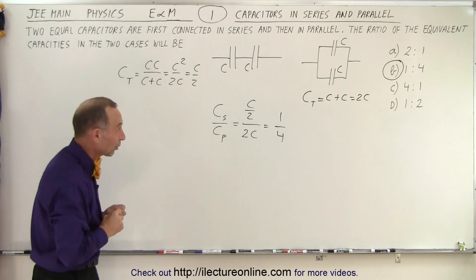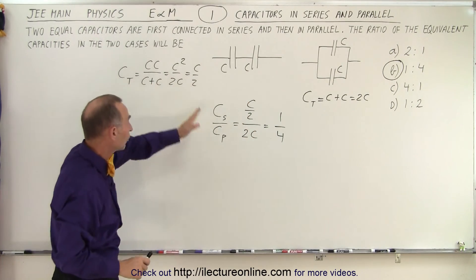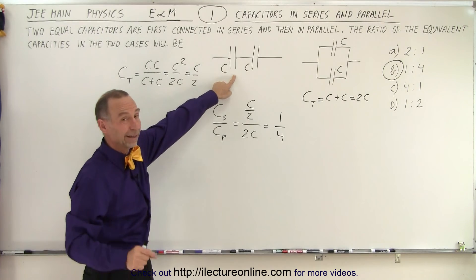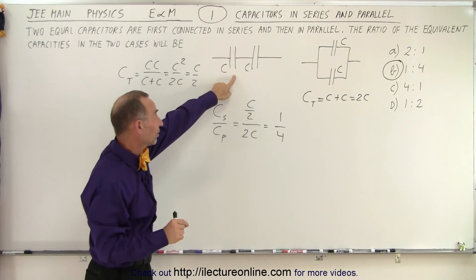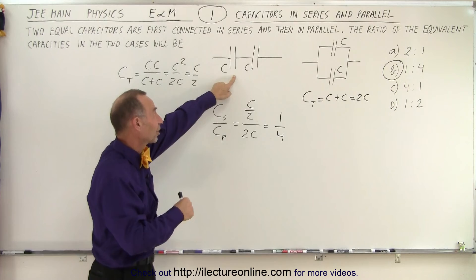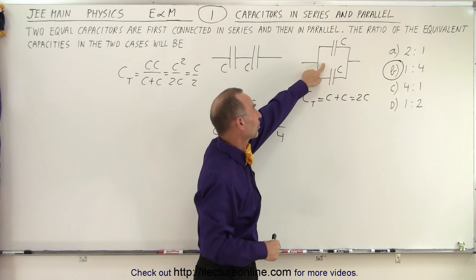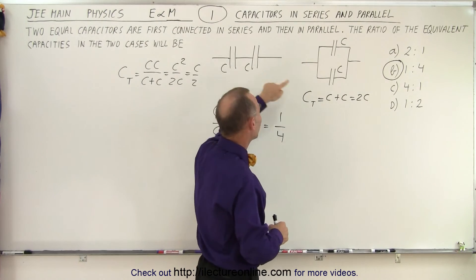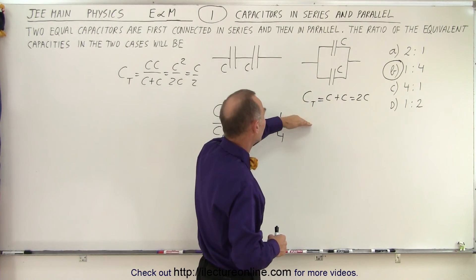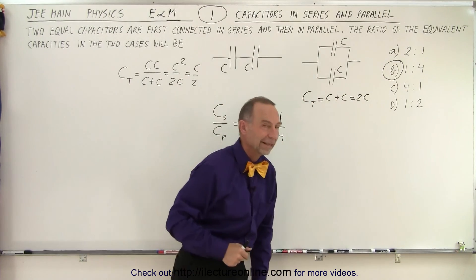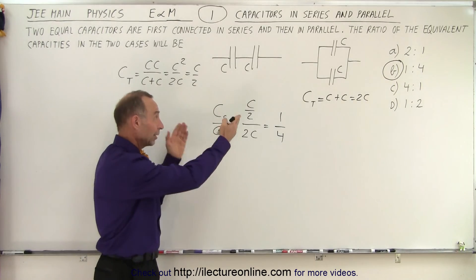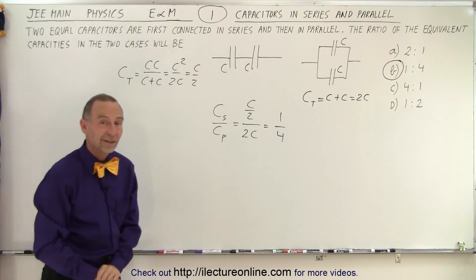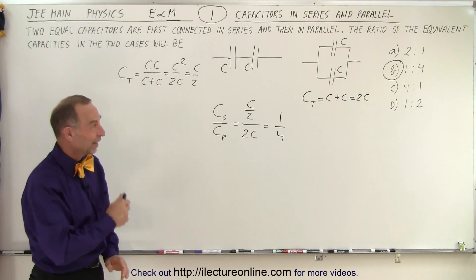So you can think of it rather quickly without having to go through this process. You can simply realize if you connect two capacitors in series, you end up with half the capacitance. If you connect two capacitors in parallel, you end up with double the capacitance. Half and double. If you want to find the ratio, that will be 1 over 4. And there's your answer. Or you can quickly go to the equations and set up the ratio. And that is how it's done.